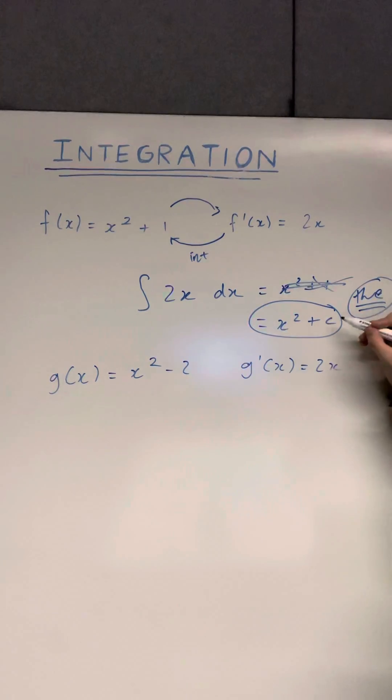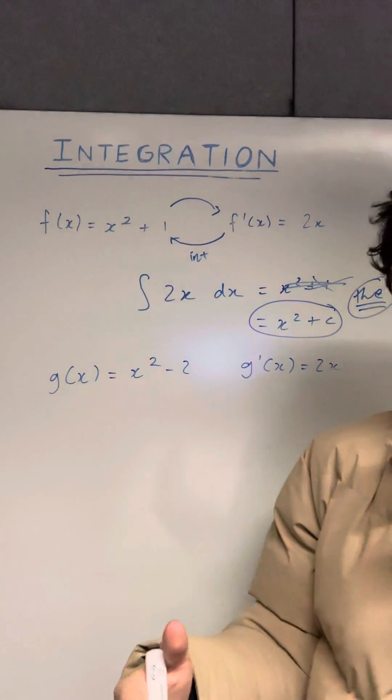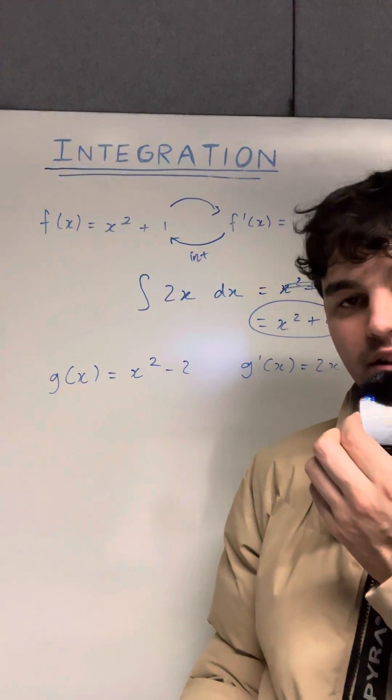But if you're trying to find the antiderivative, you have to leave it as plus c, unless you have an extra piece of information that can help find c for you.